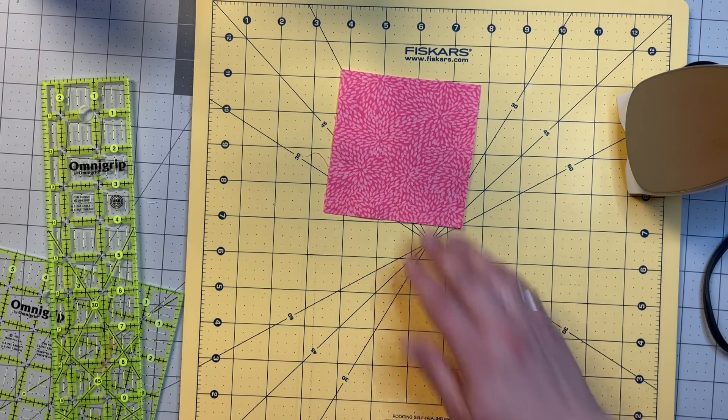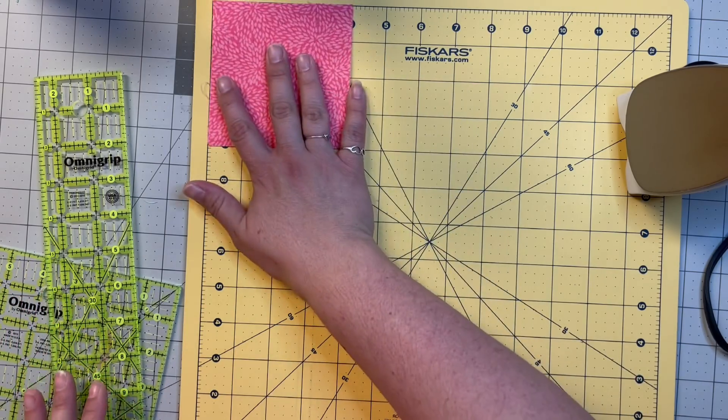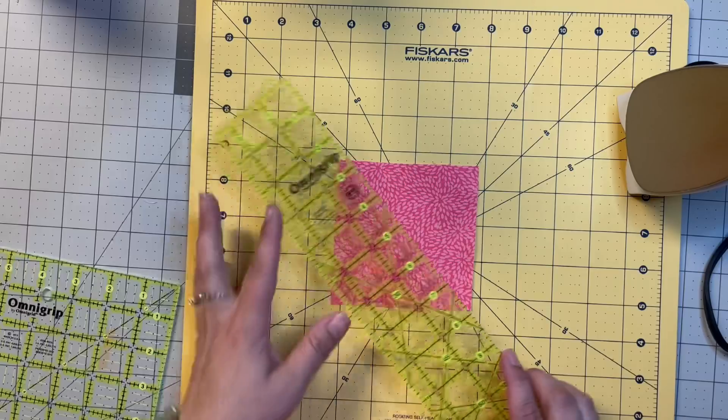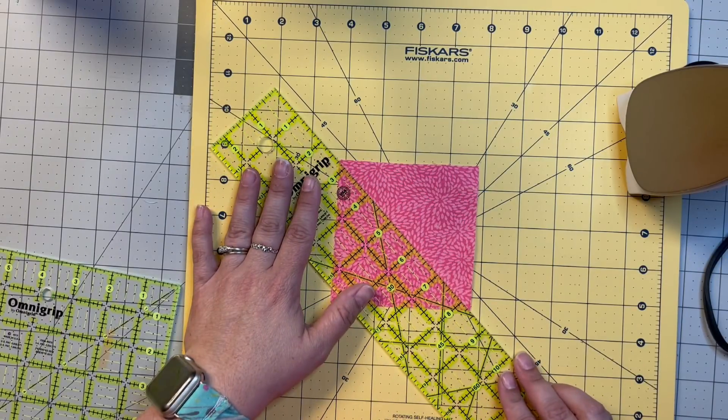To start with, I have two squares here that are 4 inches by 4 inches. I have them stacked up and we're just going to cut them corner to corner.